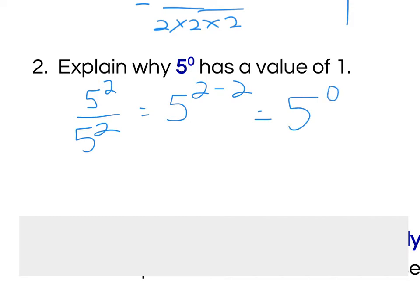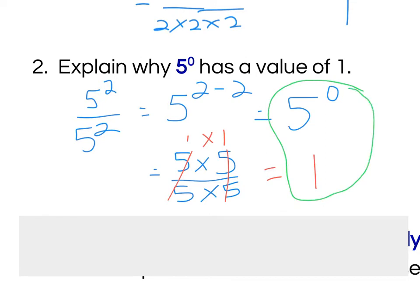But I also know that another way that I could write out this expression is in its expanded form, which is to say 5 times 5 divided by 5 times 5. And I know, of course, 5 divided by 5 gives me 1, and 5 divided by 5 gives me 1, and 1 times 1, of course, gives me 1.